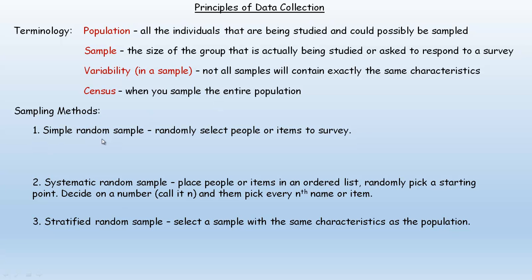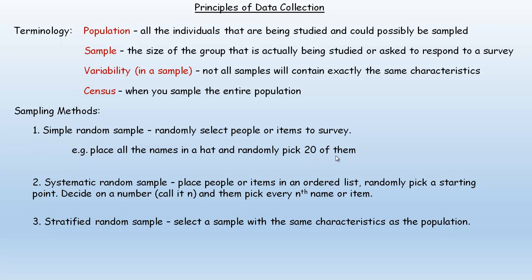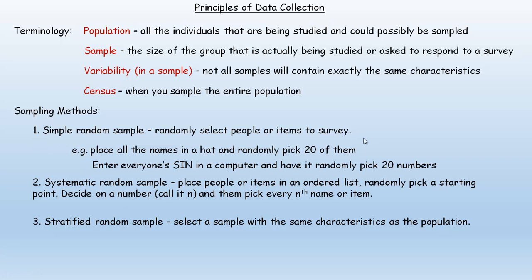One of the simplest sampling methods is a simple random sample, where you randomly select people or items to survey. For example, you place all the names in a hat and randomly pick 20 of them. Or using technology, you could put everyone's social insurance number — SIN in Canada stands for social insurance number — into a computer and have it randomly pick 20 of the numbers.